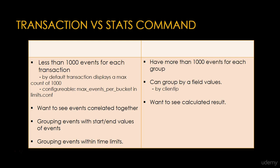Now I am going to talk about Transaction versus the Stats command — a very important concept that can be asked in interviews. You should use Transaction when there are fewer than 1000 events for each transaction. By default, the Transaction command displays a maximum of 1000 events, but you can configure this using the max_events_per_bucket option in limits.conf. Use Transaction when you want to see events correlated together with a field, when you want to group events with startswith and endswith values, or when you want to group events within a time limit using maxpause or maxspan.